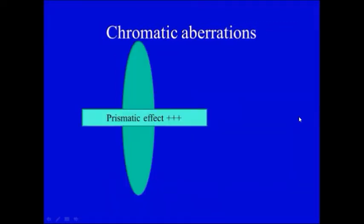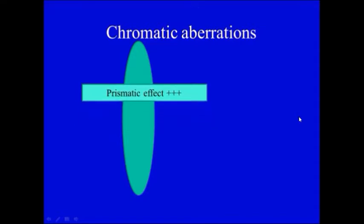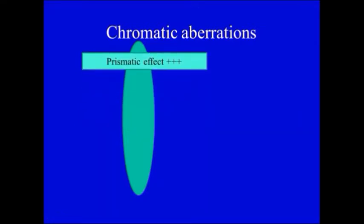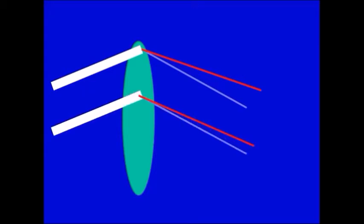The chromatic aberration is more as we go to the periphery of the lens, as the prismatic effect increases. So rays getting into periphery are analyzed more than those into the central area.